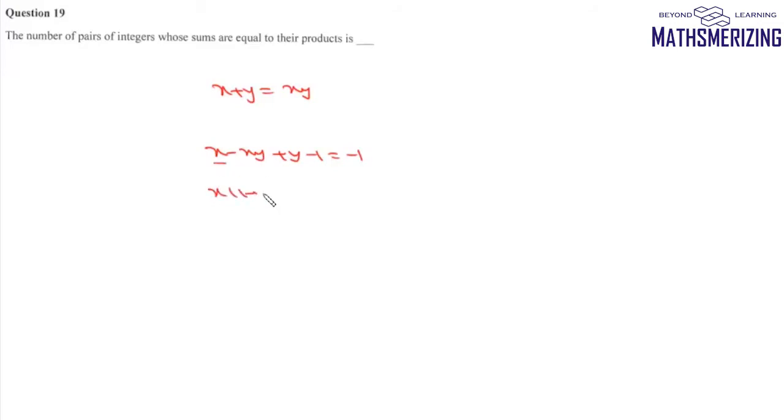Here we'll take x common: x times 1 minus y plus y minus 1 equals minus 1. We'll take y minus 1 common: y minus 1 times 1 minus x is equal to minus 1.